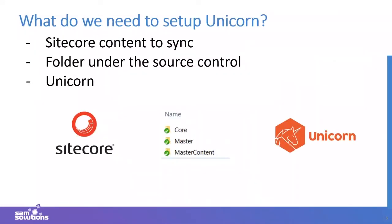What do we need to set up Unicorn? In short, there are three things: first, we need Sitecore and we need Sitecore content to sync; then we need a folder under source control so we can store the serialized items as files; and finally we need Unicorn, which will do the job. I assume you already have a Sitecore instance, so we need to set up the last two things — the folder and Unicorn.